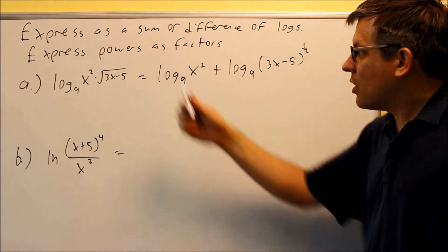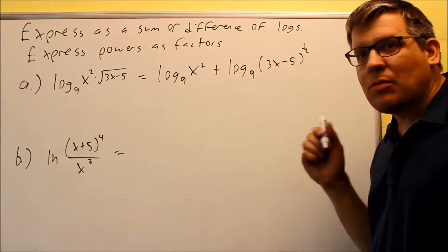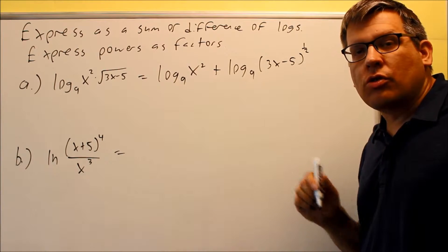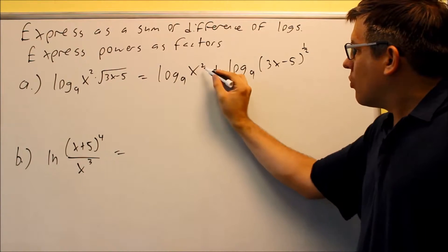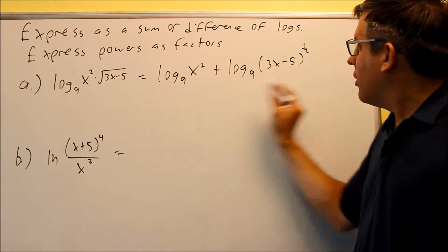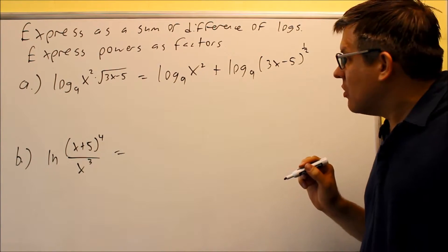The reason why we're doing that is because of this second sentence here, express powers as factors. What that means is they want you to use rule number five to bring the power down in front of each of those. So we're going to take two, we'll bring it down in front here, the one half we'll bring down in front there. That's what that rule tells us to do.